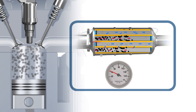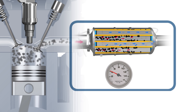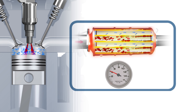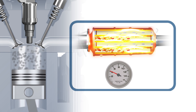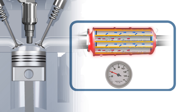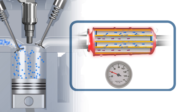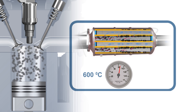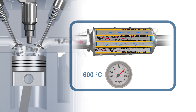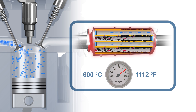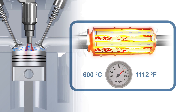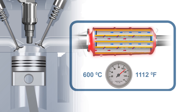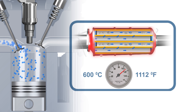During regeneration, additional fuel is injected via multiple post injections in order to increase the exhaust gas temperature. During this period the DPF temperature is raised to approximately 600 degrees Celsius or 1100 degrees Fahrenheit, and the accumulated soot is oxidized or burned off as CO2.